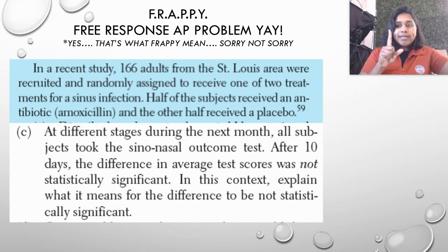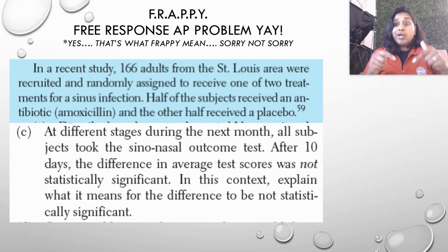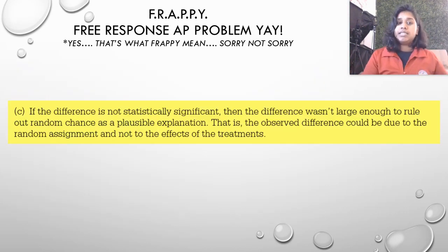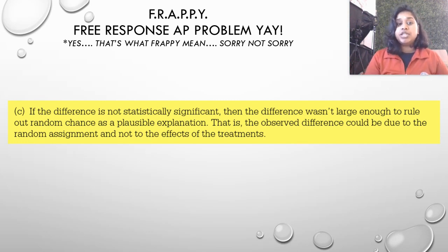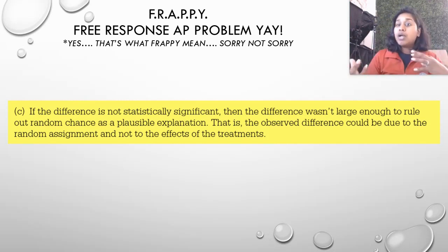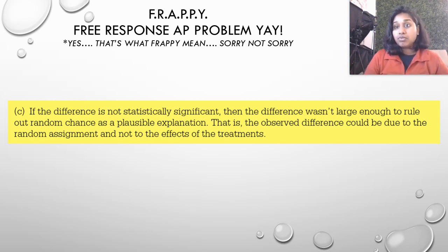The first thing you have to do is figure out what statistically significant means and then put it in context. Because the difference in average test scores was not statistically significant, the difference wasn't large enough to rule out random chance as a plausible explanation. That means the observed difference could be due to the random assignment and not the effects of the treatment — it means we can't rule out chance.